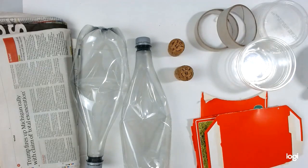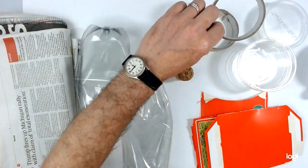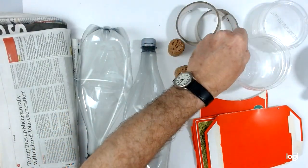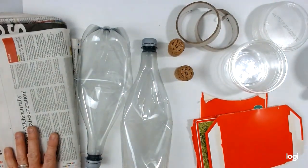So here are my main ingredients. I've got some plastic bottles, some corks, some used up masking tape rolls, some plastic tubs and lids, some cardboard, some newspaper.